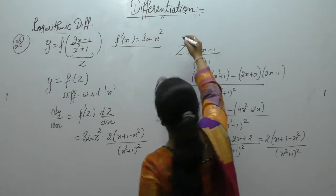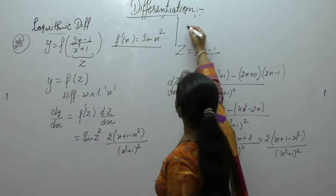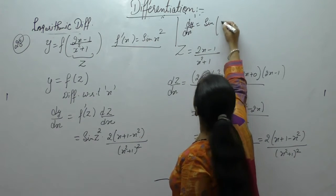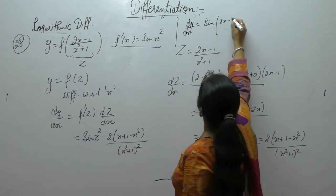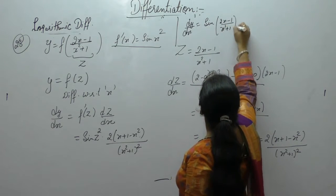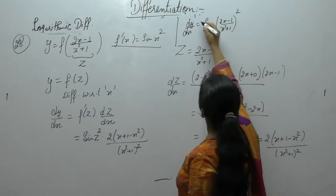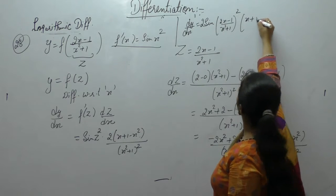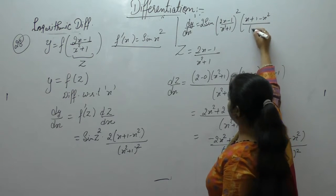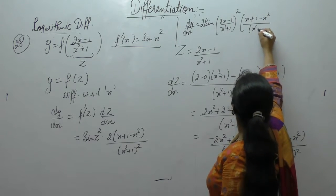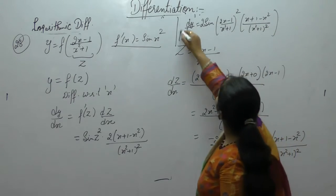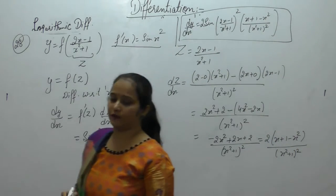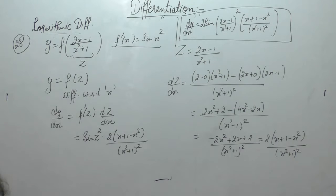We have f'(z) = sin(z²), and dz/dx = 2(2x+1-x²)/(x²+1)². Substituting the value of z: dy/dx = sin[(2x-1)/(x²+1)]² · 2(2x+1-x²)/(x²+1)². This is the value of dy/dx.